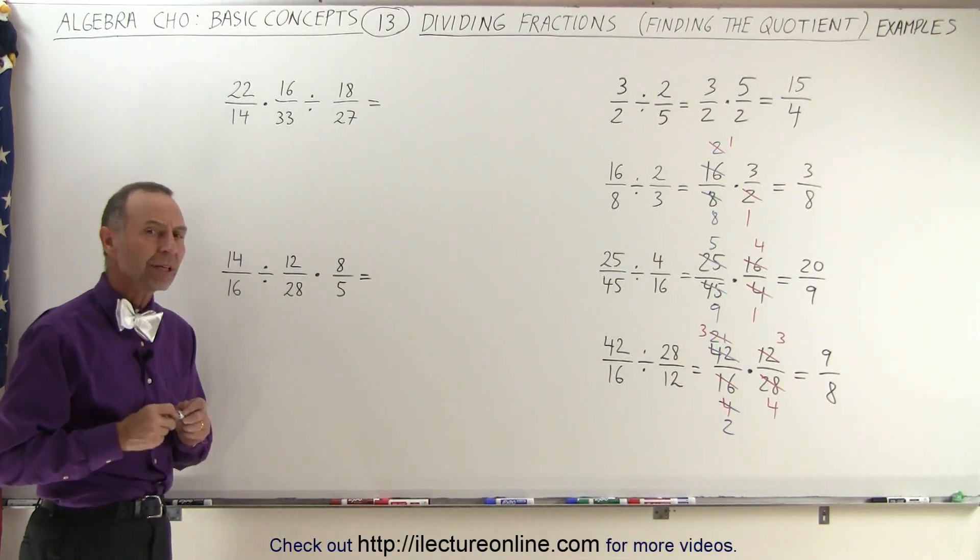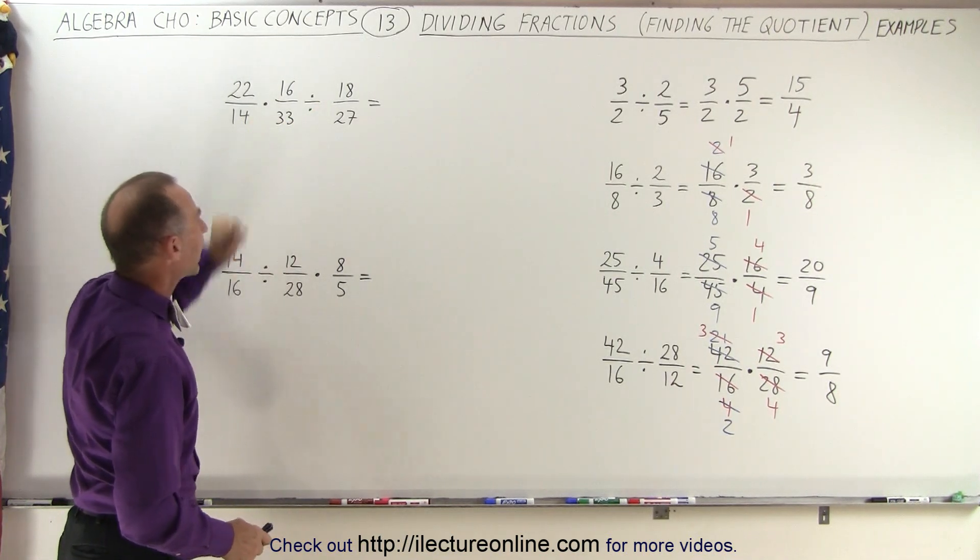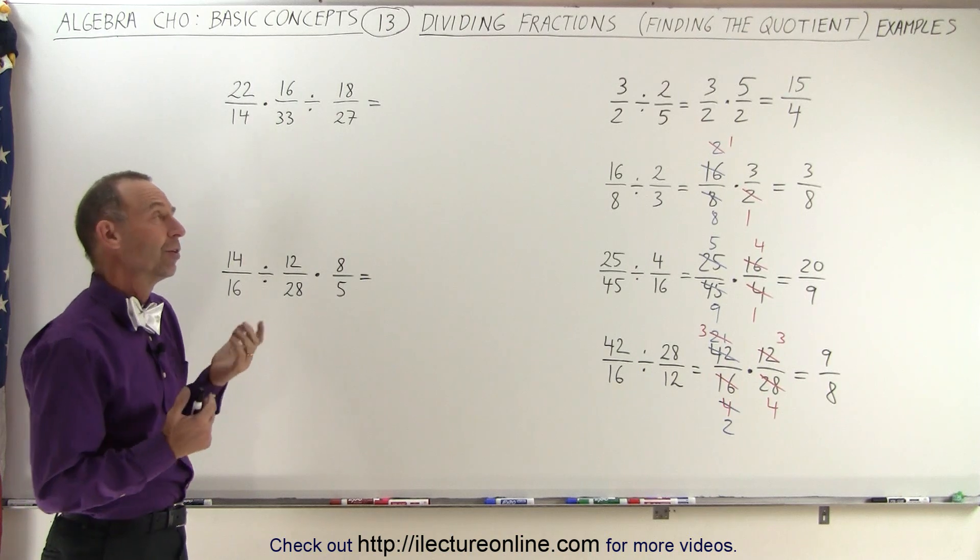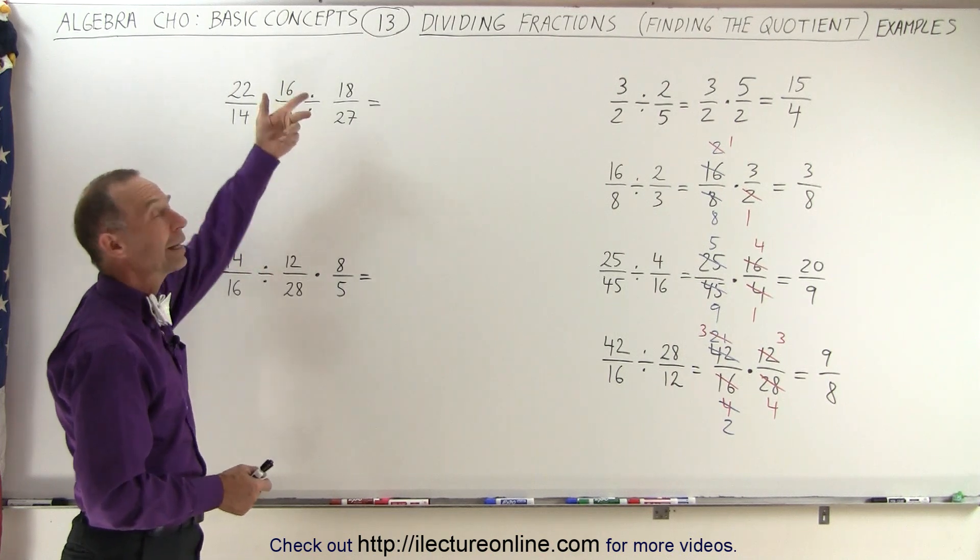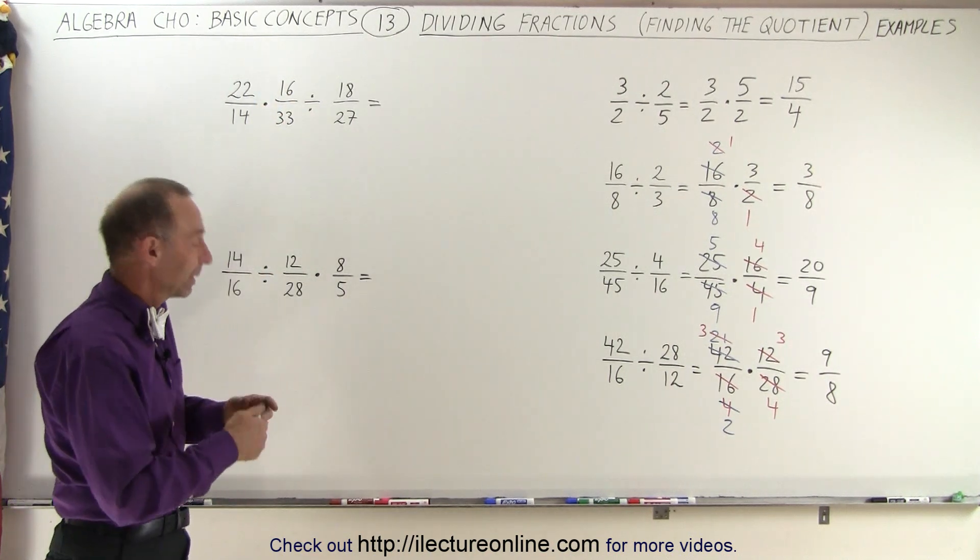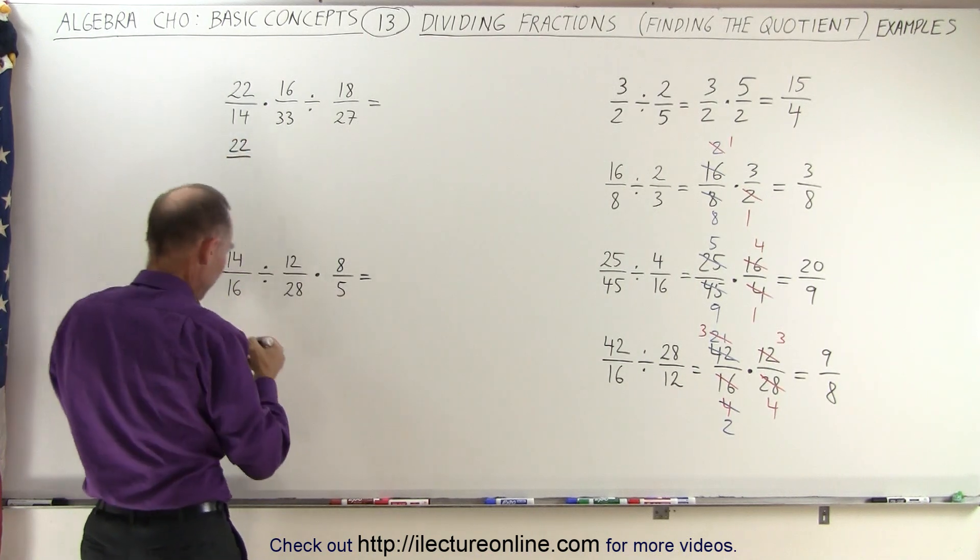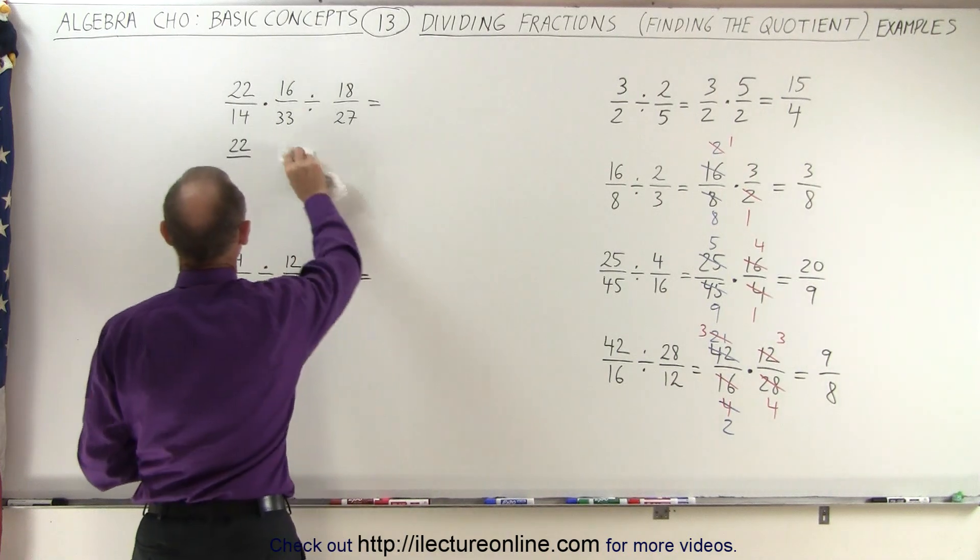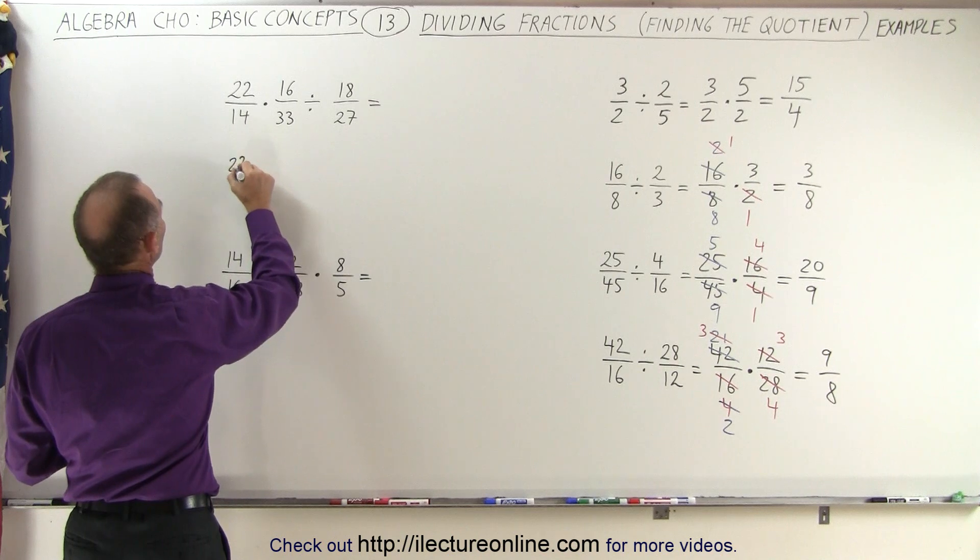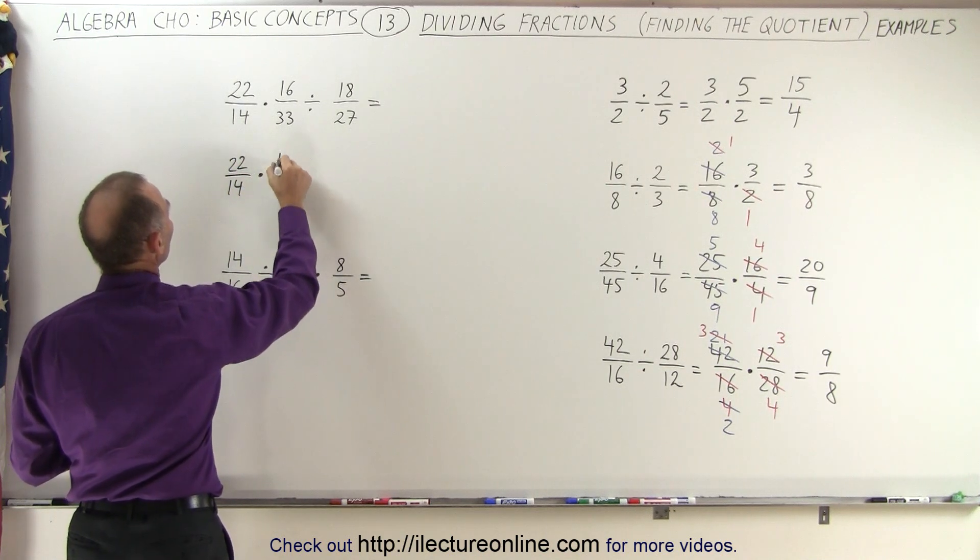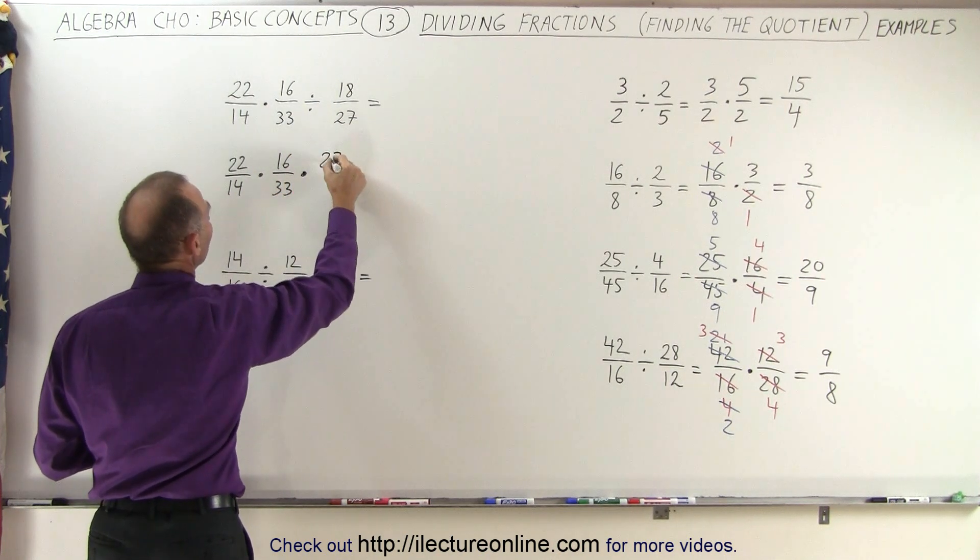Now let's go over here. Something has changed. Not only do we have divide by a fraction, we also have a multiplication between two fractions. So here, since this division sign is at the very end, we can simply turn that into multiplication by turning the fraction over, by taking the inverse. So this can be changed to 22 over 14, times 16 over 33, and then times the inverse of that, which is 27 over 18.